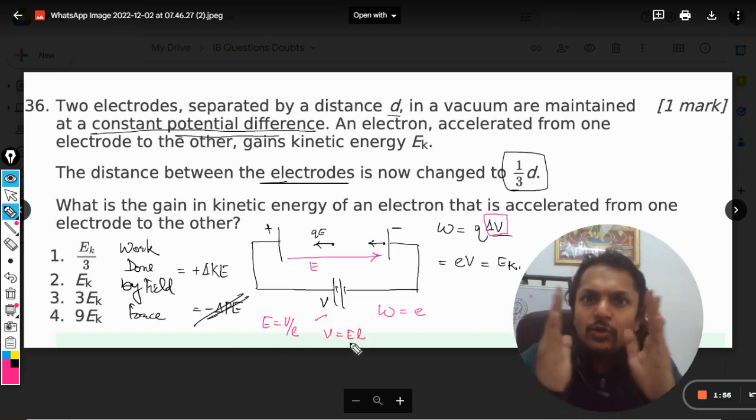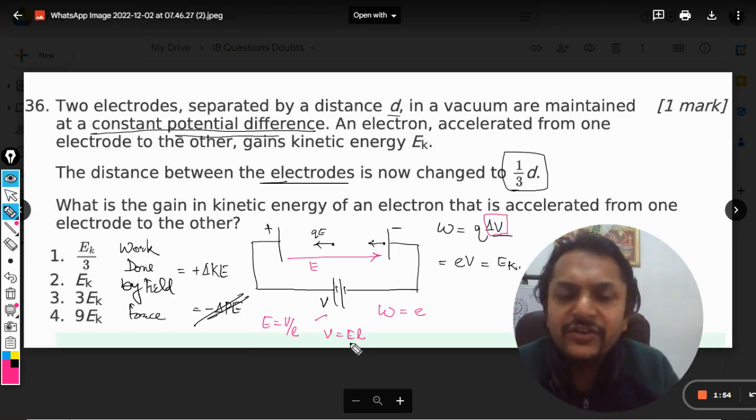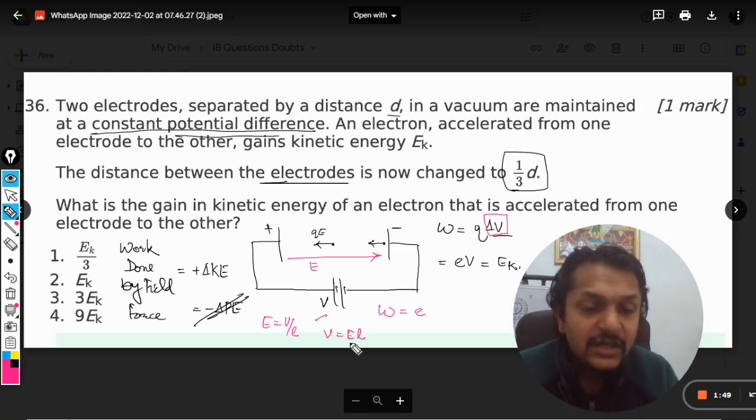So more is the l, more is the gap, lesser is the electric field. And lesser is the gap, more will be the electric field between the plates. But the potential difference is going to be the same.